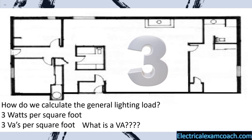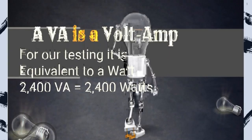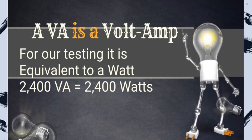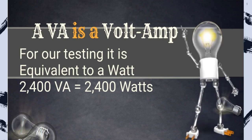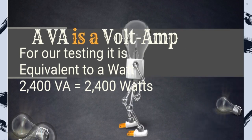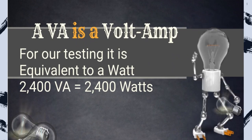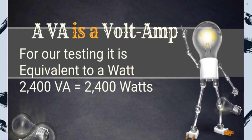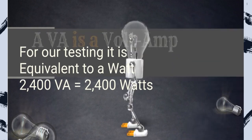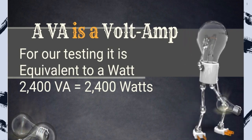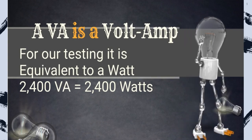What is a VA? A VA is a volt amp, and for all of our testing it's equivalent to a watt. So it's true to say that 2,400 VAs is equivalent to 2,400 watts. For these calculations, we're going to be calculating at 3 VAs per square foot.